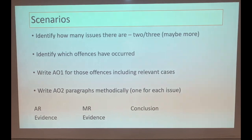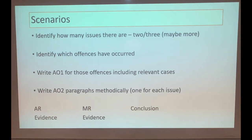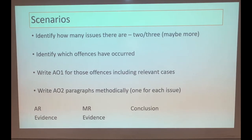For exam scenarios, make sure you identify how many issues there are - usually two or three, maybe more. Identify which offences have occurred: assault, battery, ABH, or one of the GBH offences, or a combination. Once you've established which offence applies, write out the AO1 with relevant cases, then write the AO2 paragraphs methodically - one per issue - covering the actus reus with supporting evidence, then the mens rea with supporting evidence, and concluding by answering the question.